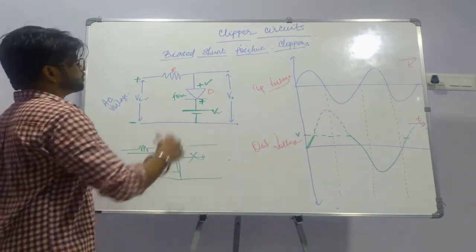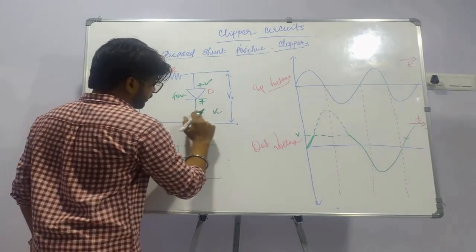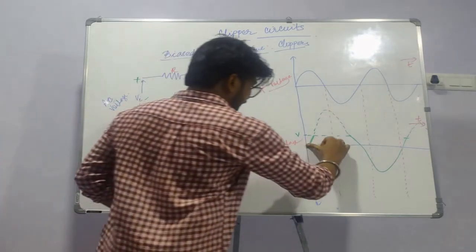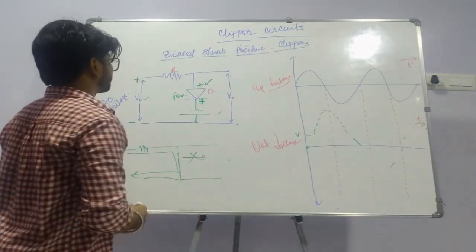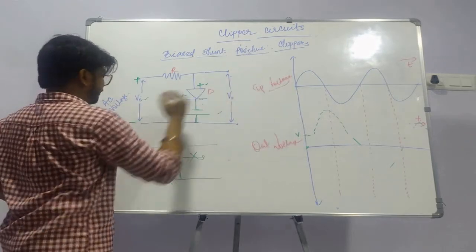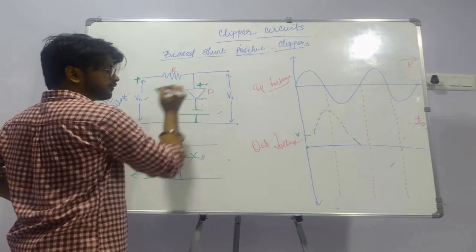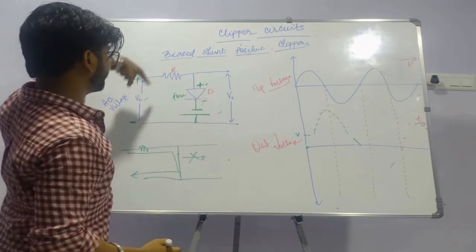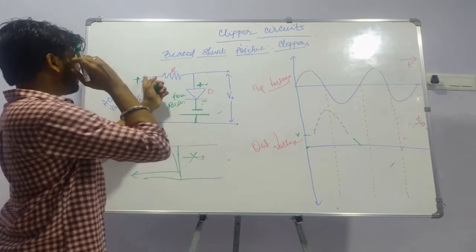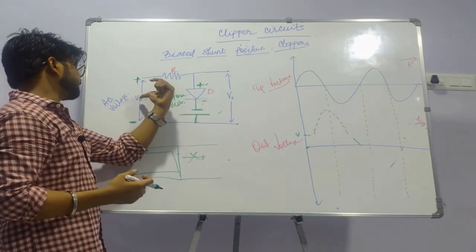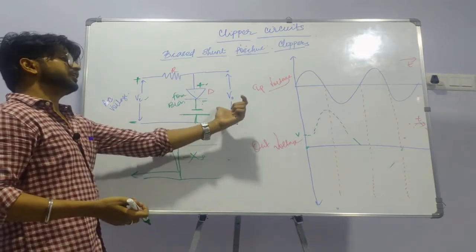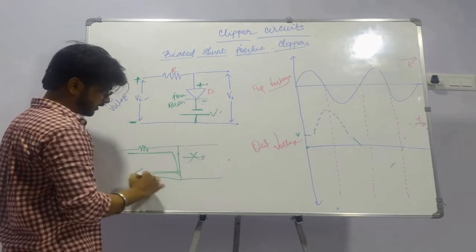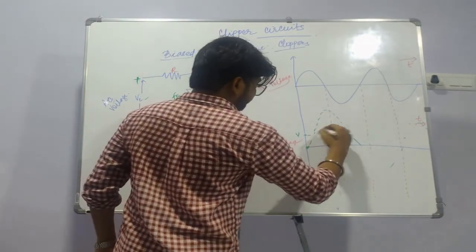Next is the bias shunt positive clipper under negative bias DC voltage condition. In the first half cycle, the positive is connected to the positive of the diode and the negative of the voltage is connected to the negative of the diode, so overall it behaves as a forward bias condition considering both Vi and DC voltage V. As it is forward biased it behaves as a closed circuit, so there is no conduction in the entire positive half cycle.